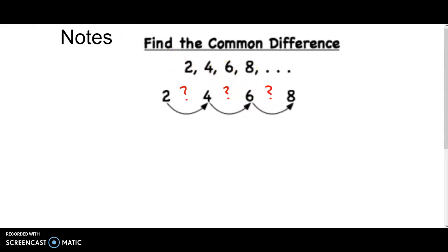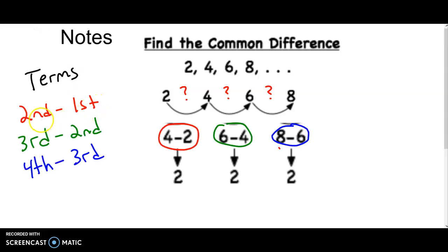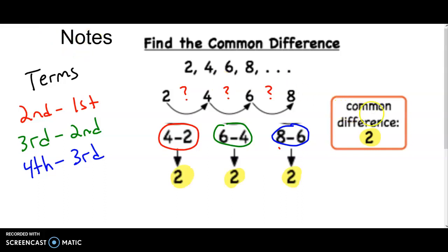Next, you want to know how much it's going up or down by the same amount. To find the common difference, you do the second minus the first term, the third minus the second term, or the fourth minus the third term — do at least two of these to confirm you get the same number. For example, four minus two is two, and six minus four is also two. If these numbers are the same, that is the common difference.